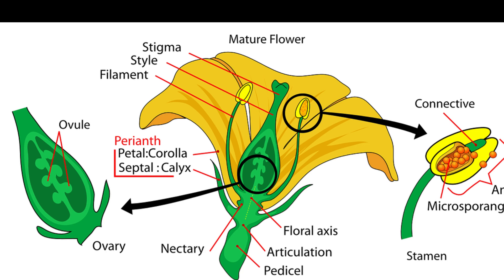4. Pistil / carpel — gynoecium: the female reproductive organ of a flower. It has three main parts. A. Stigma — the sticky top part of the pistil, adapted to receive pollen grains.